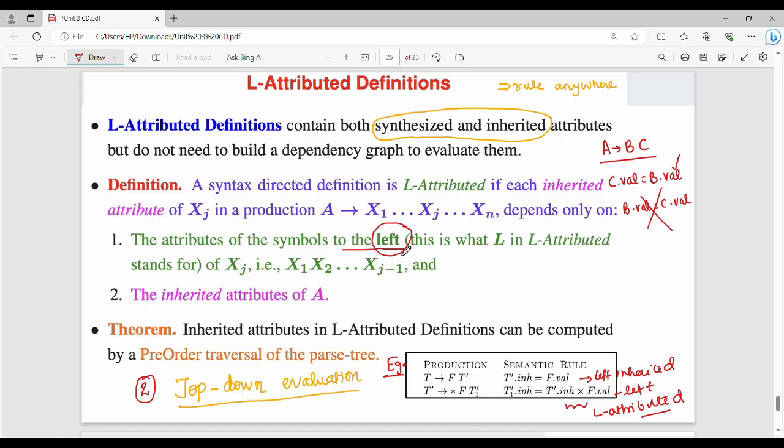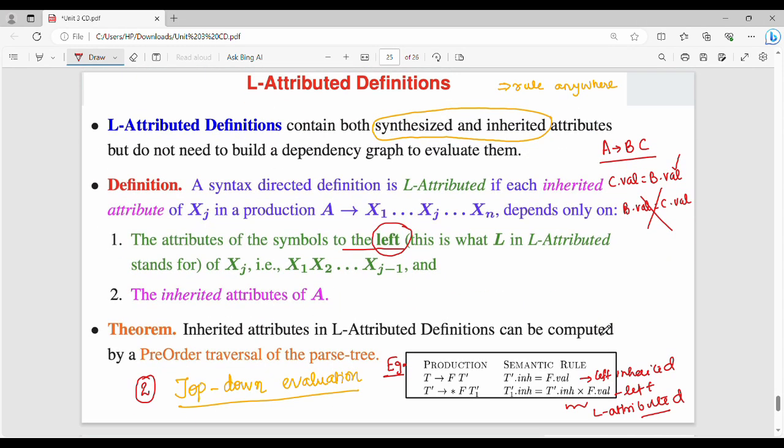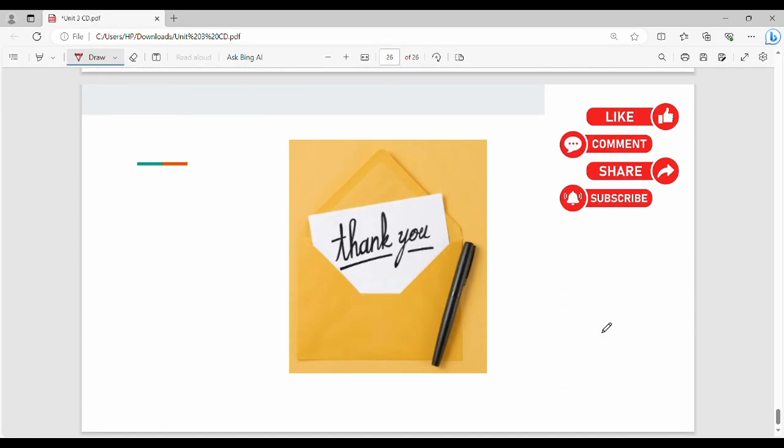If you have only synthesized attributes, it is an S-attributed definition. L-attributed definitions can have both synthesized and inherited attributes, where inherited attributes must be left inherited. If an inherited attribute depends on the right sibling, it is neither S-attributed nor L-attributed.